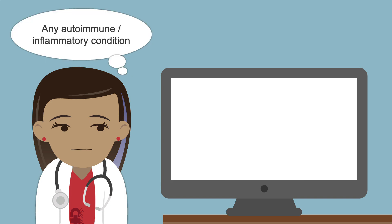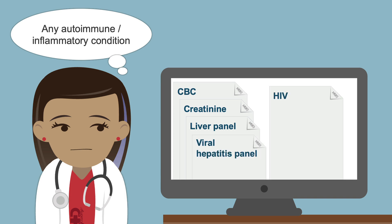Lastly, for any autoimmune or inflammatory condition, make sure to also check a complete blood cell count or CBC, serum creatinine, a liver panel, and a basic infectious workup such as a viral hepatitis panel, HIV, tuberculosis, and syphilis — not only to screen for any extracurricular manifestation or comorbidity, but also to determine if the patient may have a contraindication to any therapeutic agent you may want to use.